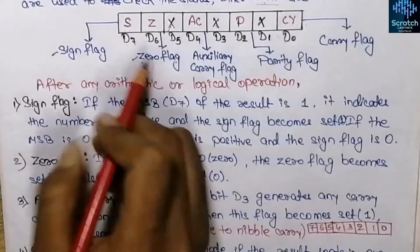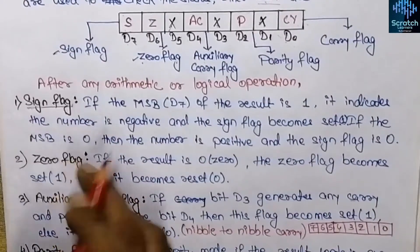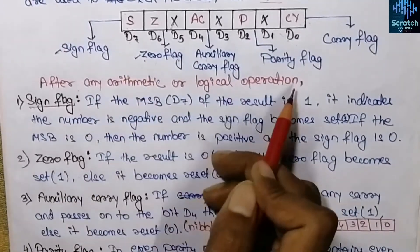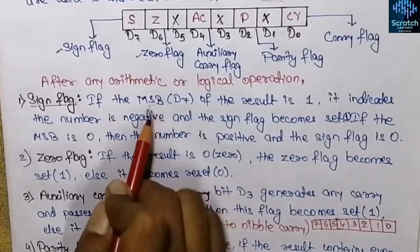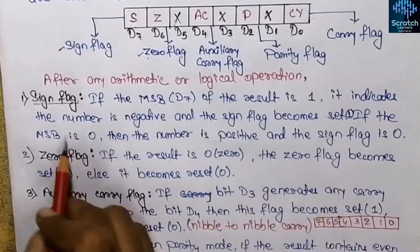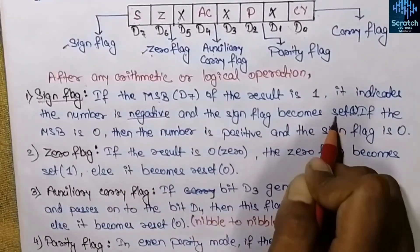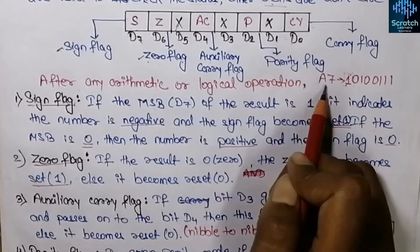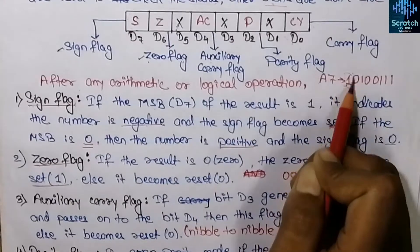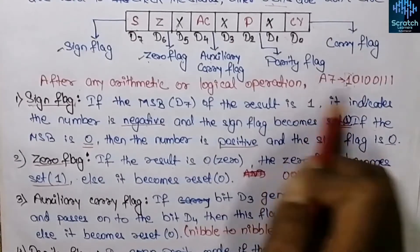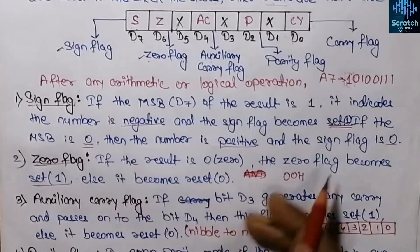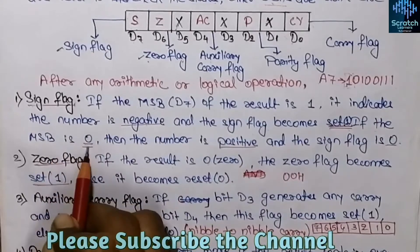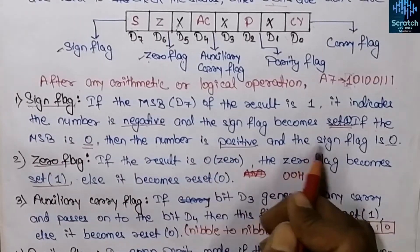The sign flag is present at the most significant bit D7. After any arithmetic or logical operation, if the most significant bit D7 of the result is 1, it indicates the number is negative and the sign flag becomes set to 1. For example, hexadecimal number A7 in binary has its most significant bit as 1, so the number is negative and the sign flag is set to 1. If the most significant bit is 0, the number is positive and the sign flag becomes 0.